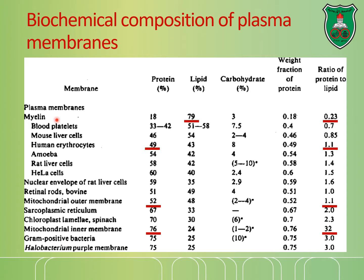Compare this to myelin sheath, which is mainly composed of lipids as a structural component, with a ratio of about 1 protein to 3 molecules of lipids. The mitochondrial outer membrane also has a ratio of about 1 to 1. However, the mitochondrial inner membrane is mainly composed of proteins compared to lipids, so the ratio is almost 3-fold—the value should be 3.2, not 32—which serves the metabolic purpose of that part of the cell.